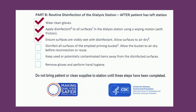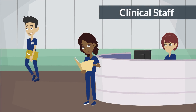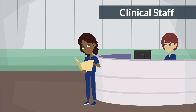Ensure surfaces are visibly wet with disinfectant. Allow surfaces to air dry. Disinfect all surfaces of the emptied priming bucket. Allow the bucket to air dry before reconnection or reuse. Keep used or potentially contaminated items away from the disinfected surfaces. Remove gloves and perform hand hygiene. Do not bring patient or clean supplies to the station until these steps have been completed. This completes the environmental cleaning process between patient treatments, which is usually the responsibility of the clinical staff.